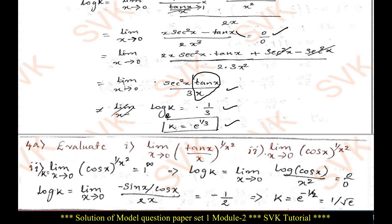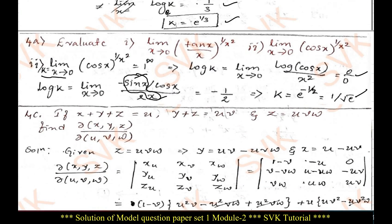The next problem is lim(x→0) (cos x)^(1/x²). Let k = lim(x→0) (cos x)^(1/x²). When the limit is applied, it is 1^∞ form. Take log on both sides — it becomes 0/0 form. Apply L'Hopital's rule: differentiate to get (1/cos x)·(−sin x) divided by 2x. Applying the limit using sin x / x → 1 and cos 0 = 1, we get log k = −1/2. Therefore k = e^(−1/2) = 1/√e.